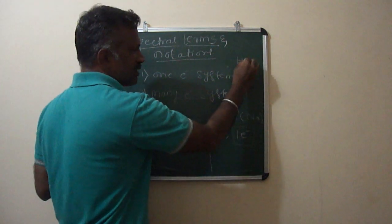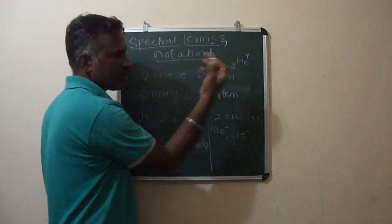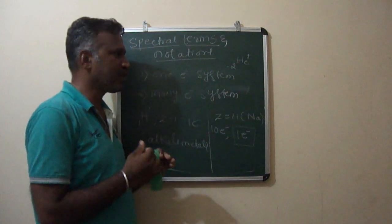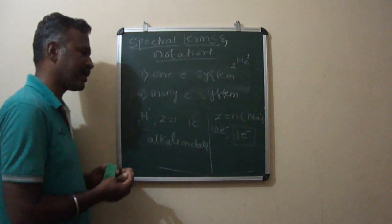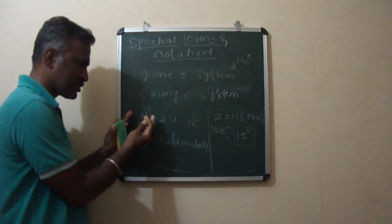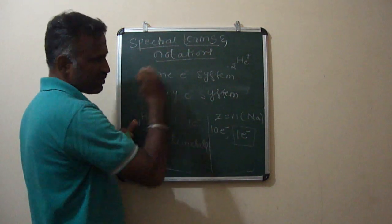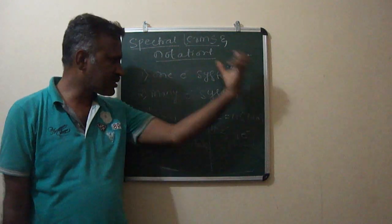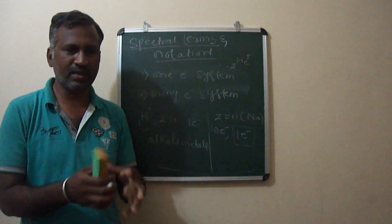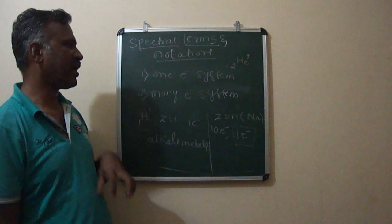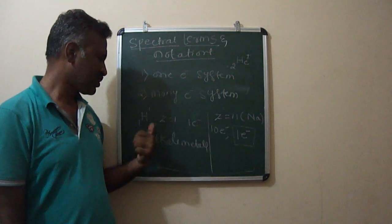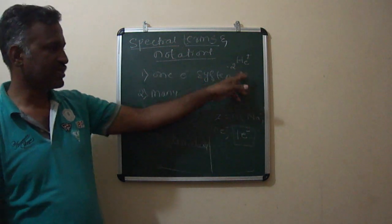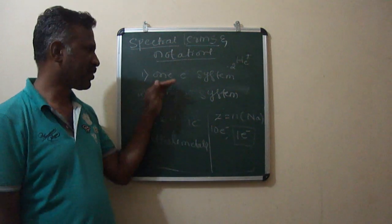Consider helium — we have two protons because the atomic number is two. If I ionize one electron, that is, if I take out one electron completely from the atom, it will be remaining with only one electron. If I excite this helium atom and compare the spectra of helium with hydrogen or sodium, the spectra of these three will be one and the same — they are similar. Therefore, we call this type of atom, which gives a similar spectrum, a one-electron system. All alkali metals are known as one-electron systems because the spectra of hydrogen, singly ionized helium, and sodium are similar.